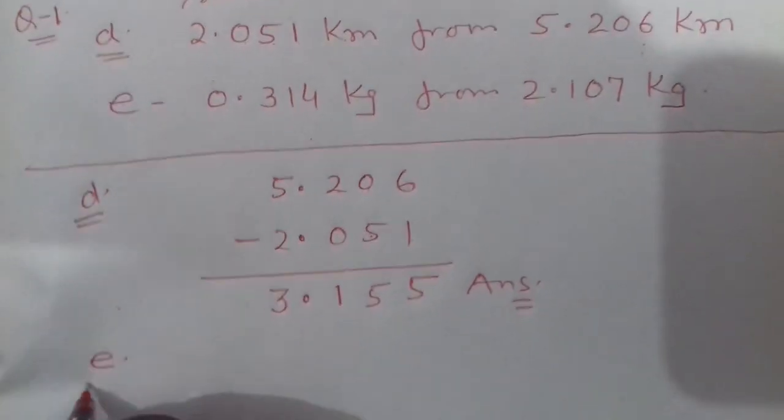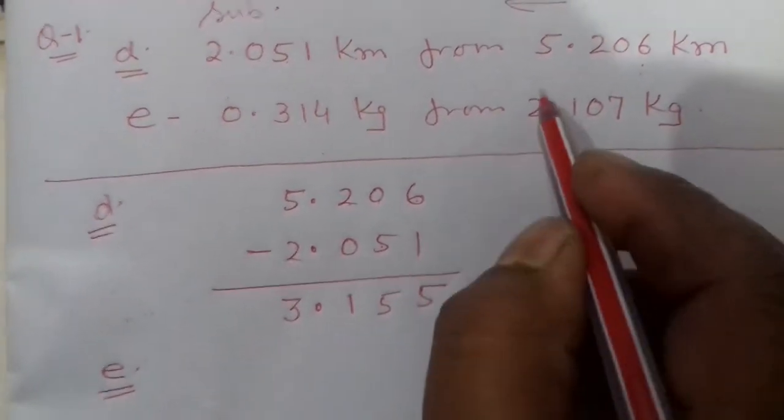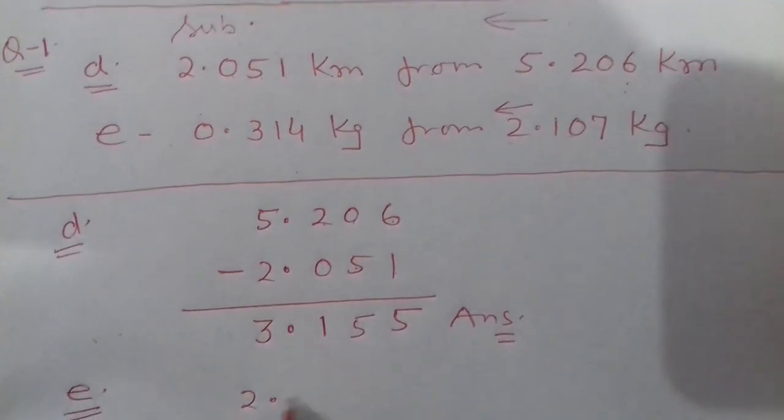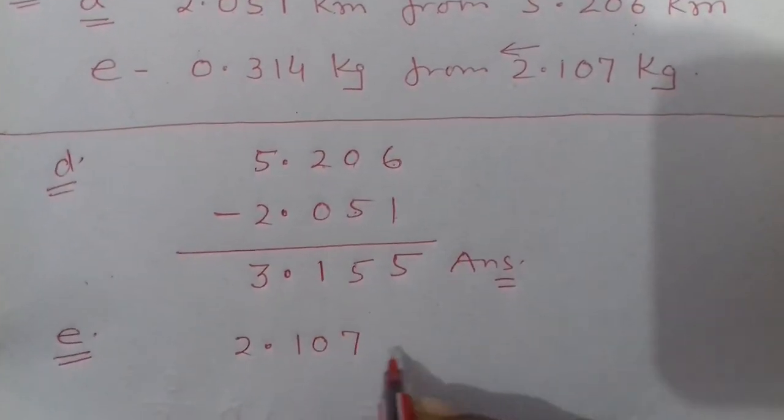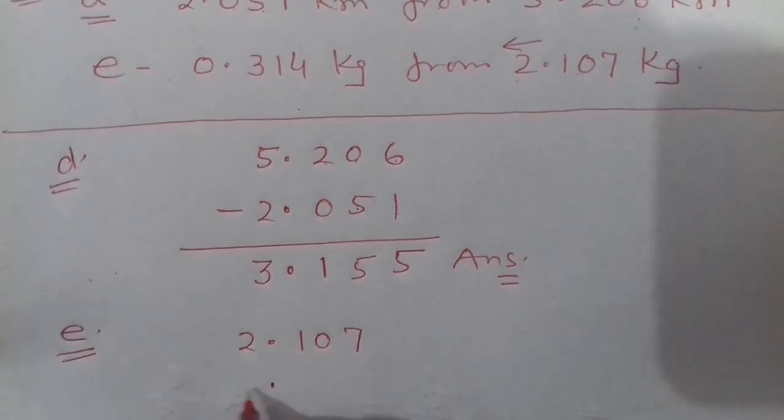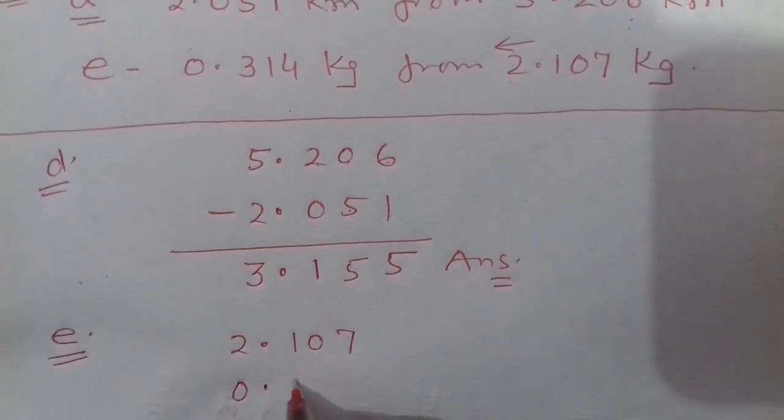Now you see here question ka part E. We start from the right side. So 2.107 mein se aapko minus karna hai 0.314.